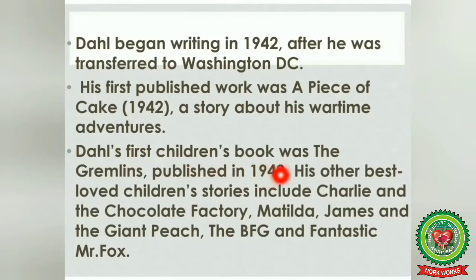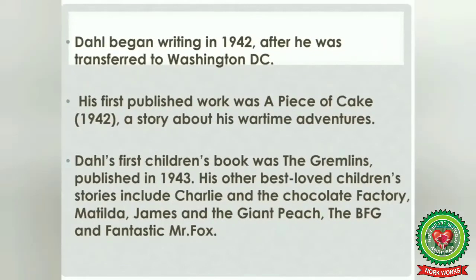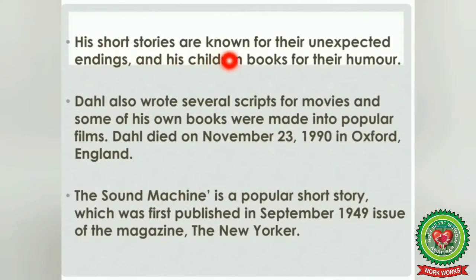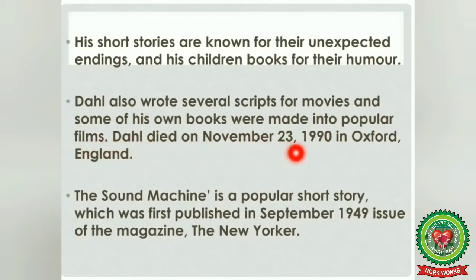Dahl's first children's book was 'The Gremlins', published in 1943. His other best-loved children's stories include 'Charlie and the Chocolate Factory', 'Matilda', 'James and the Giant Peach', 'The BFG', and 'Fantastic Mr. Fox'. His short stories are known for their unexpected endings and his children's books for their humor. Dahl also wrote several scripts for movies, and some of his own books were made into popular films. Dahl died on November 23, 1990 in Oxford, England.